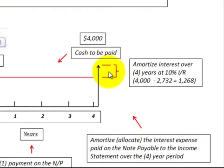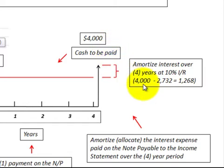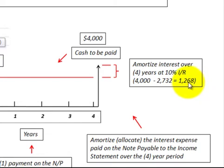Now we can calculate our interest expense. We have to amortize that interest over four years using that 10% interest rate. We calculate it here: $4,000 is the future value minus $2,732, which was our present value. That amounts to $1,268 that we have to amortize over that four-year period.